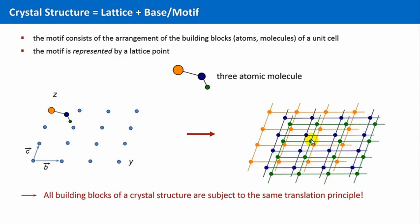One can conclude that all lattices built by the different atoms must be congruent — they are superimposable.